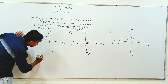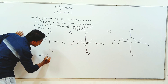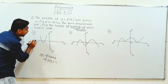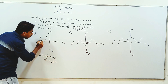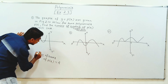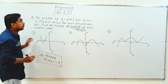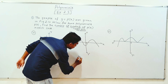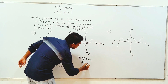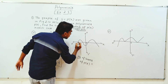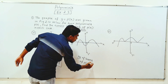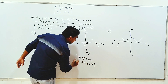Fourth question: the number of zeros of p of x. Now on the fifth question, the number of zeros of p of x. Counting: 1, 2, 3, 4. So the number of zeros of p of x is 4.